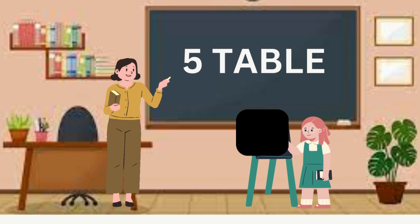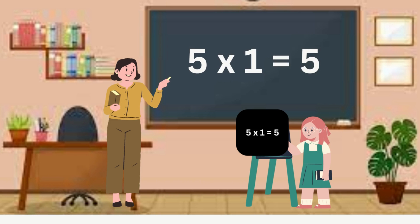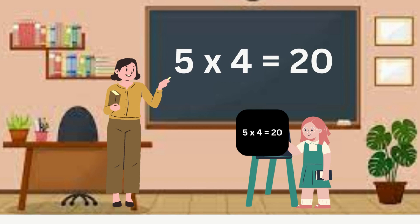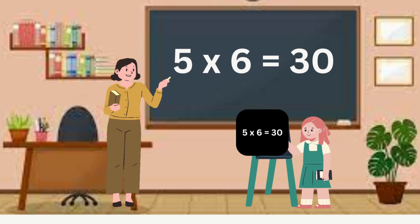Five. Five ones are five. Five twos are ten. Five threes are fifteen. Five fours are twenty. Five fives are twenty-five. Five sixes are thirty.